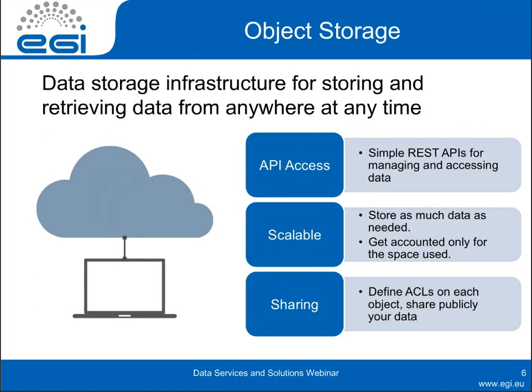In the case of object storage, it's a totally different philosophy. This is a storage infrastructure where you can store and retrieve your data from anywhere at any time. Key features: first, it's accessed by an API — normally a simple REST API, so it's quite easy to write clients for it. It's scalable, so you can store as much data as you need, and you get accounting only for the space you use. If you store one byte, that's what you get accounted for. And in this case you also have facilities for sharing: you can define access control lists on each object and share your data publicly.